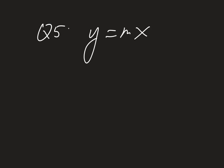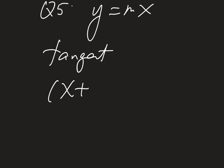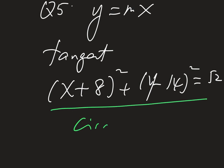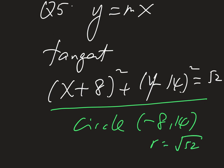We look at question number five. It states that y equals mx is the tangent to the curve with equation (x+8)² + (y-14)² = 252. Without using your GC, we understand that this is a circle with center (-8, 14) with radius equal to the square root of 252.